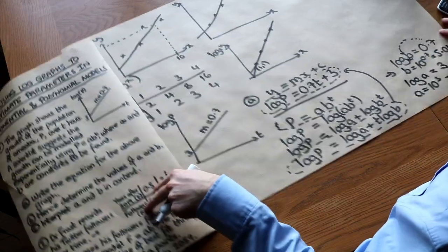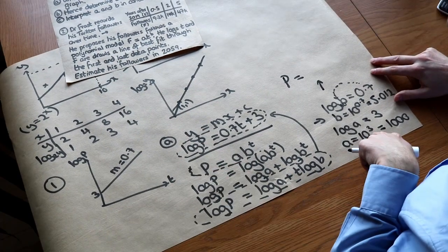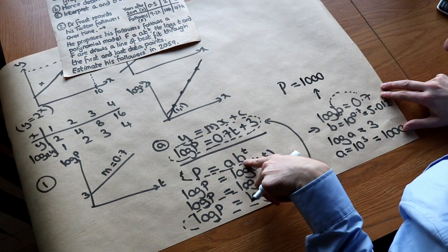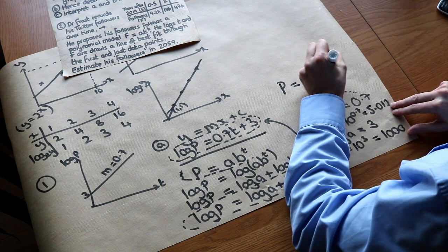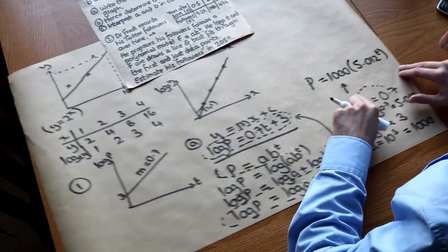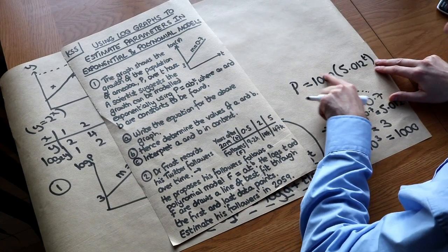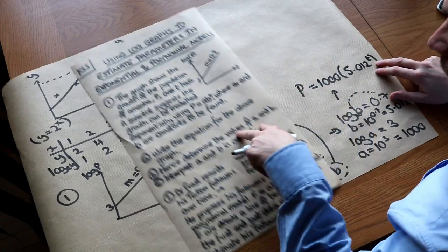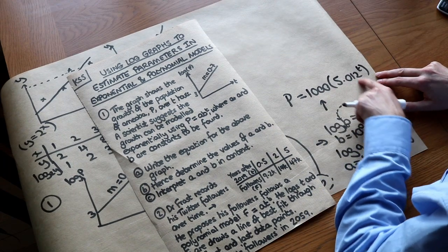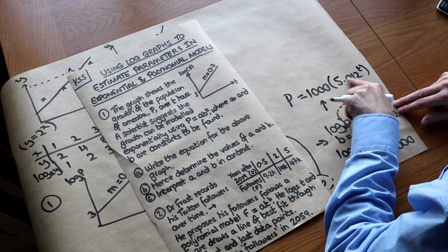We've now worked out the original exponential equation: P equals 1000 times 5.012 to the power of T. Interpreting these values: the 1000 on the front gives the initial value when T equals 0, so the initial population of amoeba is 1000. The 5.012 is the scale factor of growth — each hour, the number of amoeba is just over five times bigger.